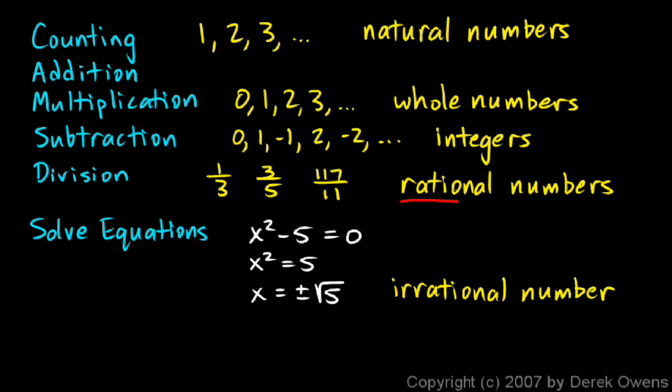And the point here is that there are certain things we want to do, certain equations we want to solve, and irrational numbers show up in the real world. So we need to add those in to our system of numbers. And interestingly, if you take all the rational and irrational numbers together, you get all the real numbers.